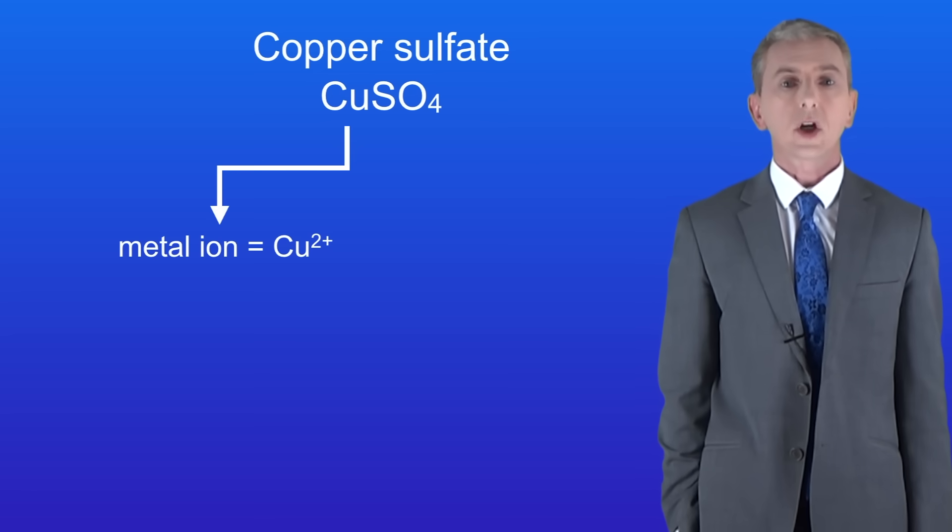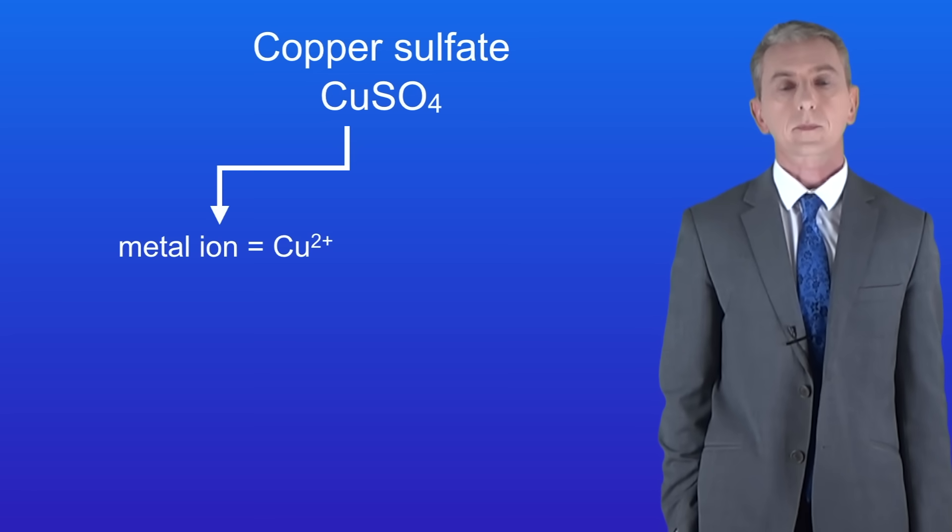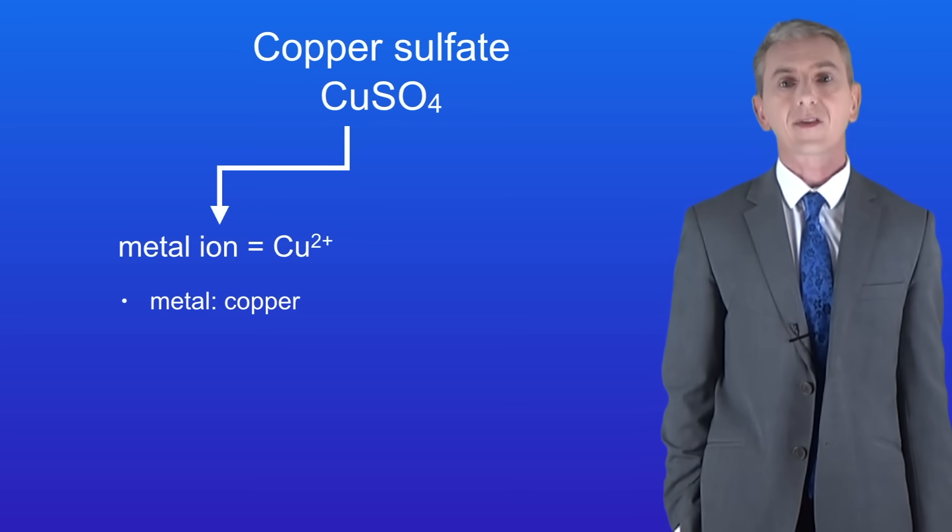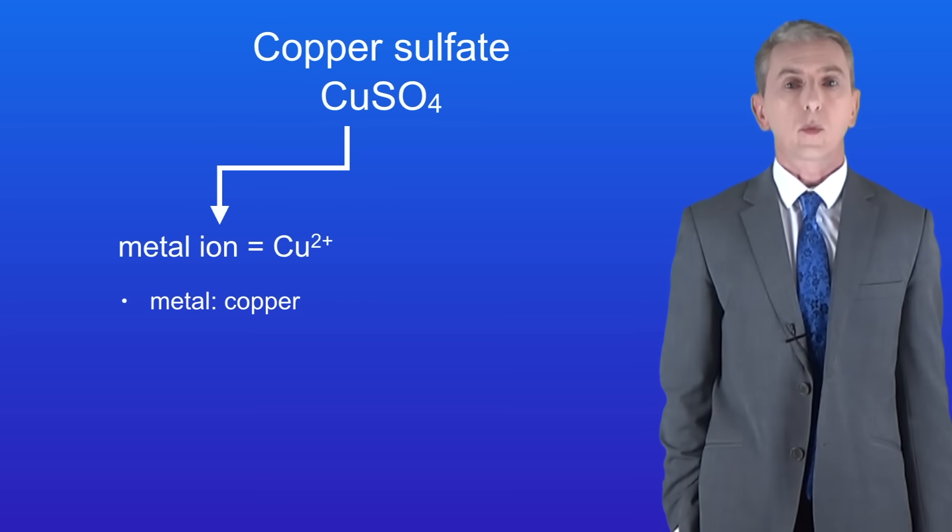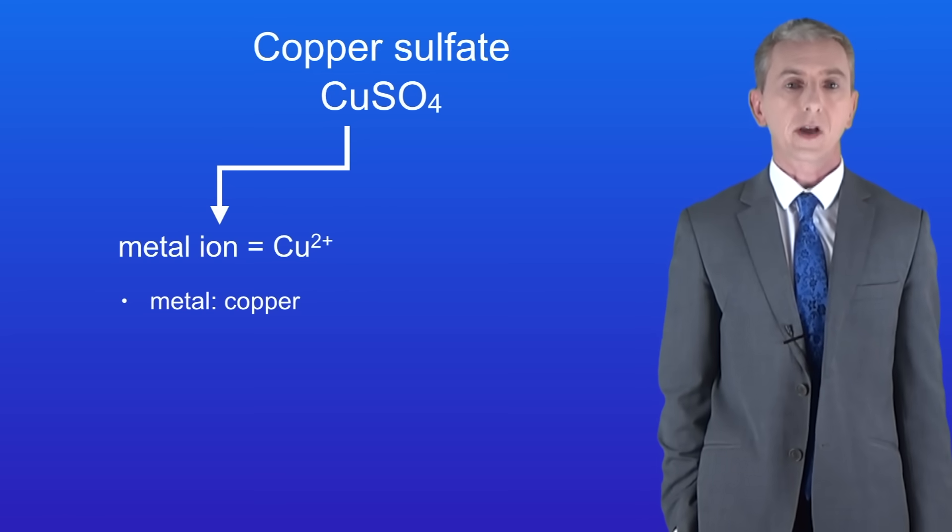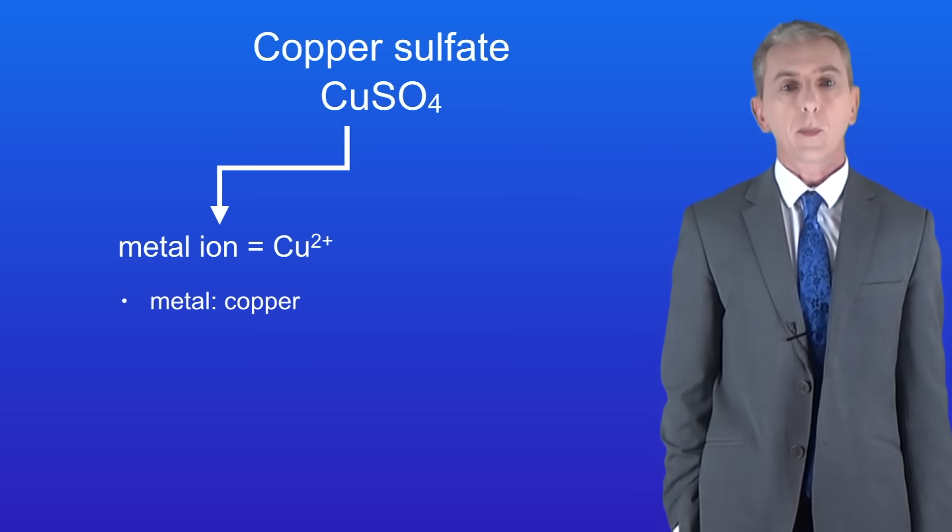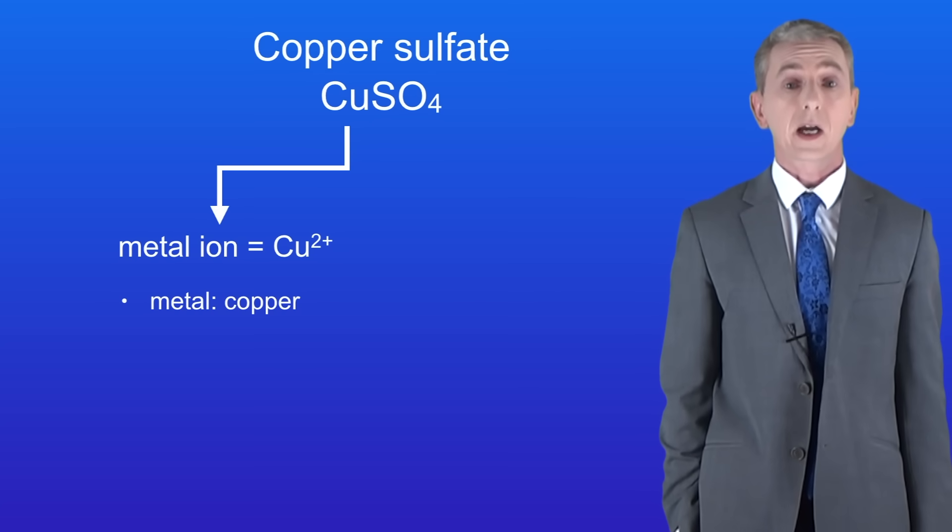This can come from four different chemicals. Firstly the metal ion could come from the metal itself, in this case copper. However I should point out that we cannot make copper sulfate by reacting copper with dilute sulfuric acid. That's because copper is not reactive enough for that reaction to take place.